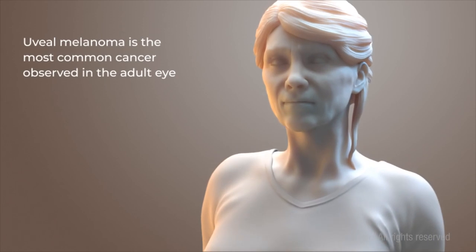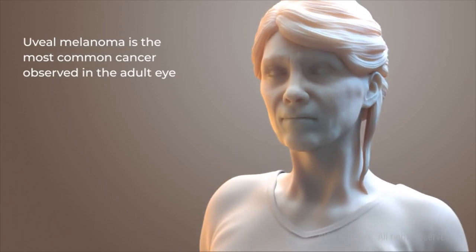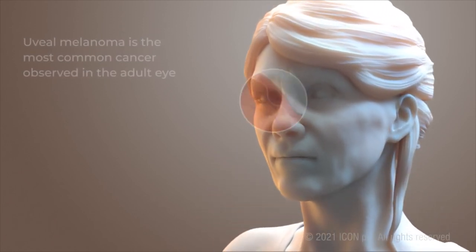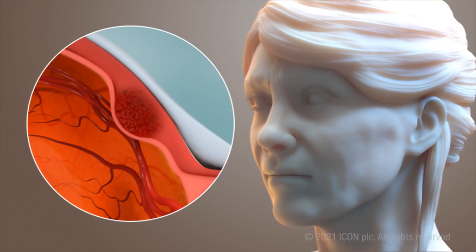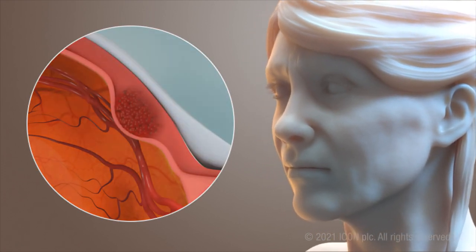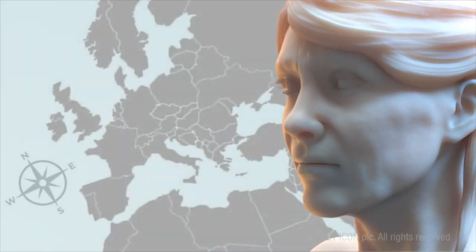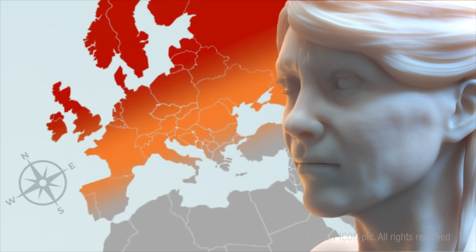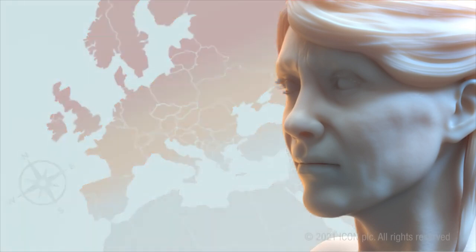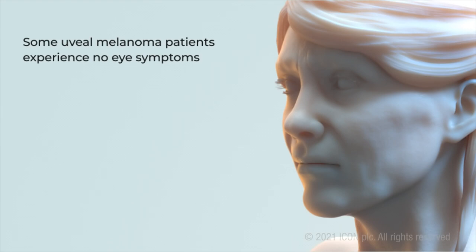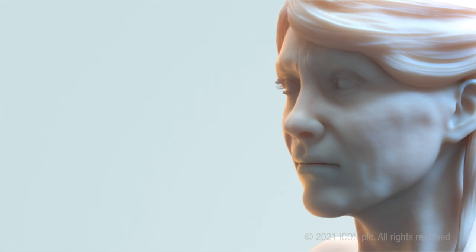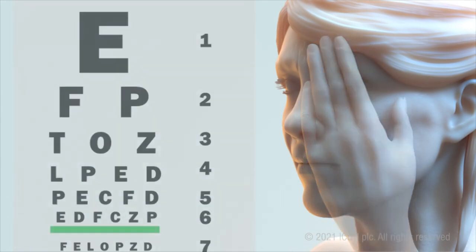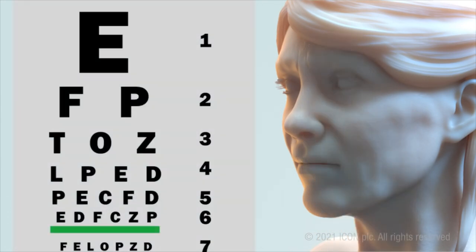Uveal melanoma is the most common cancer observed in the adult eye, with diagnosis most prevalent in ages between 50 and 70 years. In Europe, there is an increasing incidence rate geographically from south to north. Some uveal melanoma patients experience no eye symptoms, others self-identify a problem in one eye, and some cases are uncovered during routine visits to the optician.